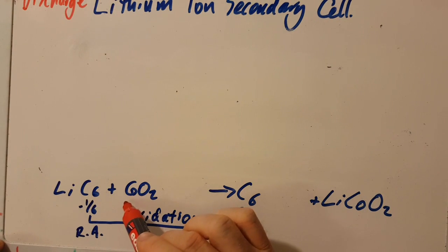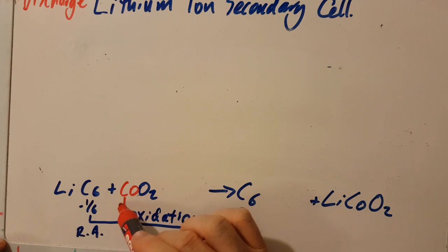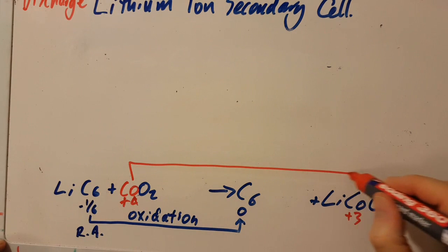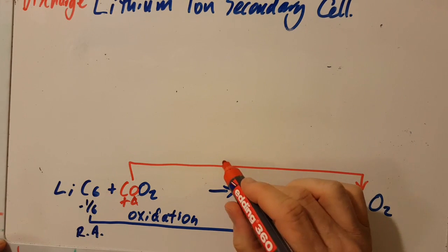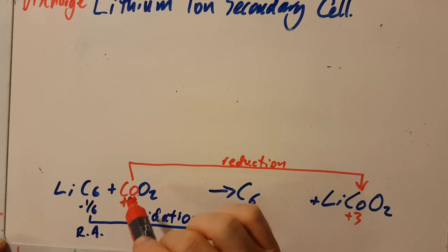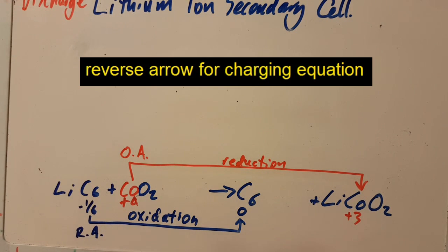And this cobalt was plus four and now it's down to plus three, and so that oxidation state goes down. That's reduction, which means this must be the oxidizing agent. You need to write the words oxidizing agent, and we're done.